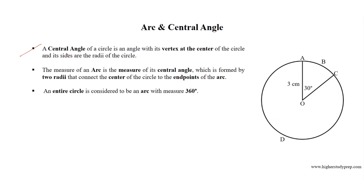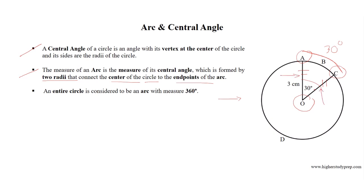A central angle of a circle is an angle with its vertex at the center of the circle, and its sides are the radii of the circle. The measure of an arc is the measure of its central angle. For example, for this circle, the central angle AOC equals 30 degrees, so the measure of arc ABC is 30 degrees. The two radii OA and OC connect center O to the endpoints of arc ABC. An entire circle is considered to be an arc with a measure of 360 degrees.